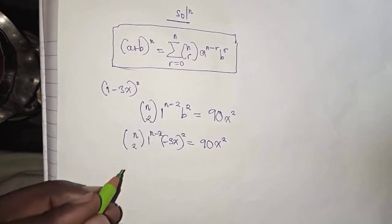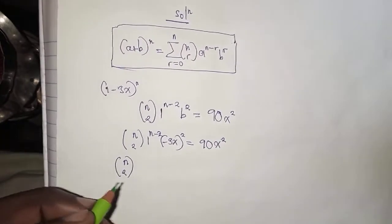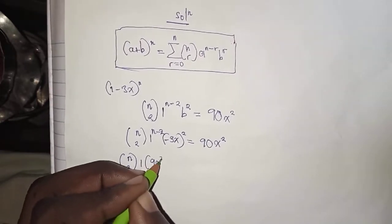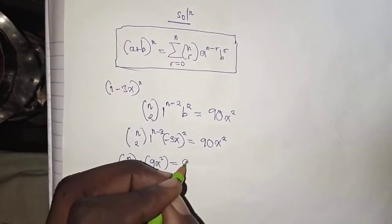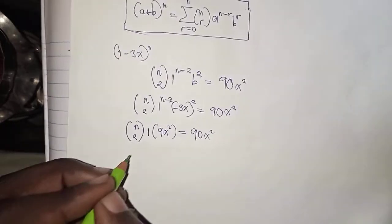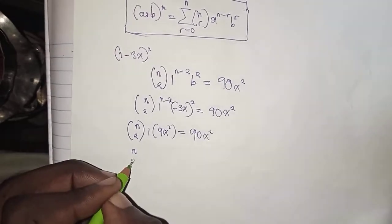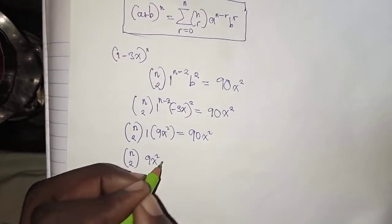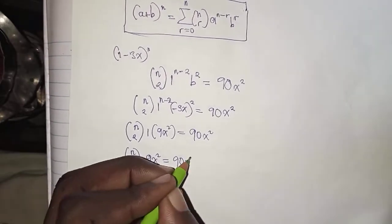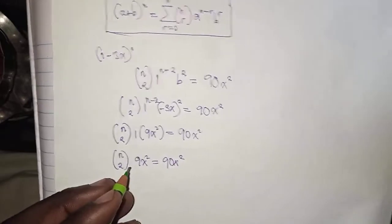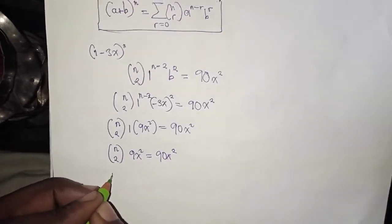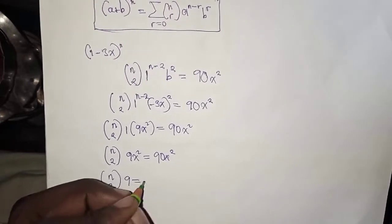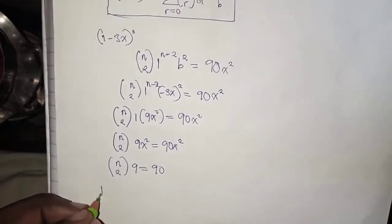So n choose 2, multiplied by 1 to the power n minus 2, gives us 1, multiplied by negative 3x squared which expands to 9x squared, equal to 90x squared. Then we multiply both sides by the multiplicative inverse of x squared, giving us n choose 2 times 9 equal to 90.